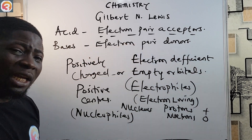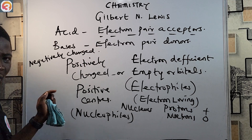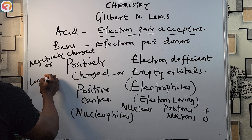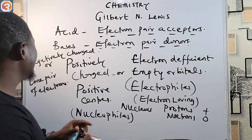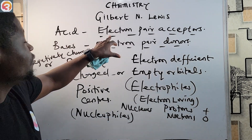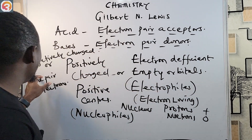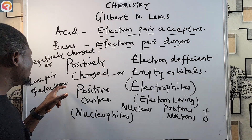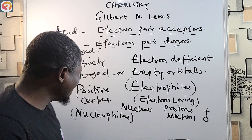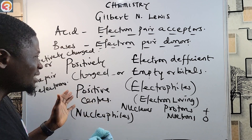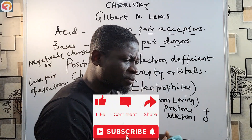These bases — electron pair donors — are usually negatively charged and have lone pairs of electrons. To summarize: Lewis acids are electron deficient, positively charged or have empty orbitals, while bases are negatively charged or have lone pairs of electrons. The most important thing to know is that acids are electron pair acceptors while bases are electron pair donors.